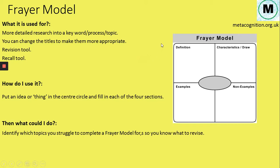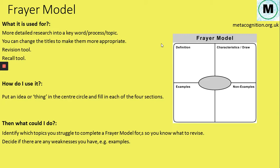You can use it to identify topics you struggle with. If you can't complete a Frayer Model on a topic, you may need to go back and revise it. You might also find weaknesses — maybe you find it easy to write a definition and draw an example, but you're stuck on examples. You could also compare it with other topics to add detail, since many topics overlap and can feed into each other's Frayer Models.